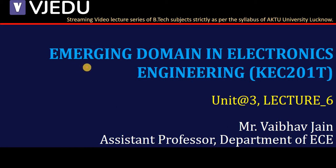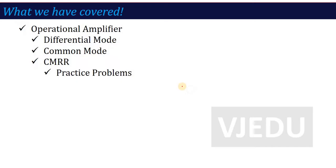Hello everyone, I welcome you all to the video lecture series of Emerging Domain in Electronics Engineering. The subject code is KEC201T and here we are in lecture number 6 of unit number 3. In the previous lecture, we talked about the operational amplifier in two modes: differential mode and common mode. In both modes, the most important characteristic calculated is called CMRR, common mode rejection ratio, which we covered in the last lecture.